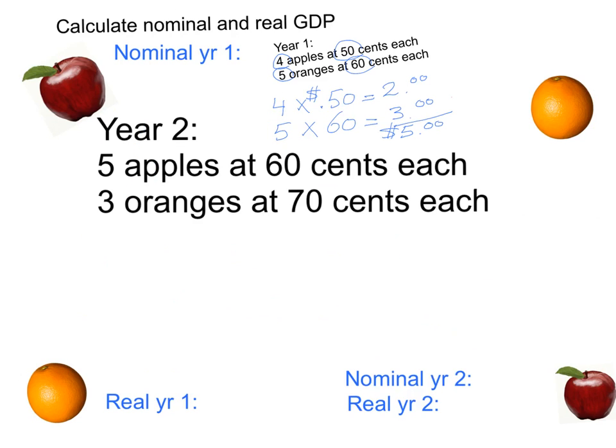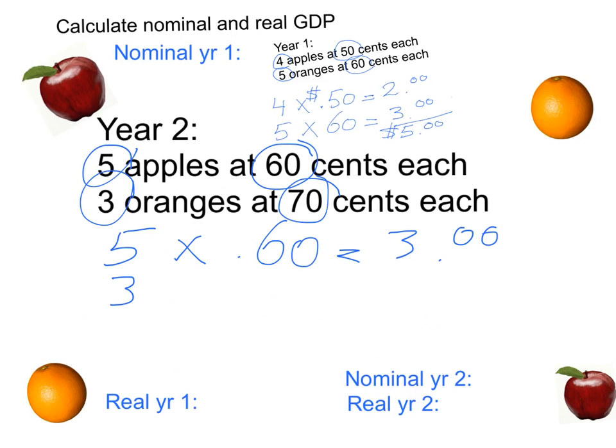Now let's calculate nominal GDP in year two. You essentially do the same thing. Take the quantity, five times the price, 60 cents. And so that is equal to $3 for the apples. And then the quantity, three times 70 for the oranges, gives you $2.10.